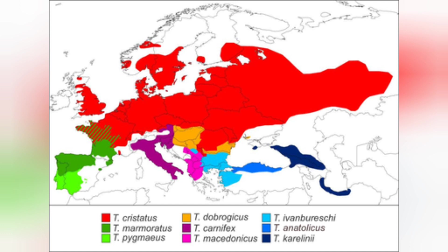When Triturus carnifex was first described, the type locality — that is, the original specimen used when giving a description of the species — was Vienna, Austria. So if the species is split into two, the main Italian animals will be the ones given a new species name, while the animals from Austria and the surrounding eastern parts of the range will retain the name Triturus carnifex. No doubt that will cause a lot of confusion, particularly in the UK where we commonly call Triturus carnifex the Italian crested newt, though throughout much of Europe the vernacular name 'Alpine crested newt' is preferred.